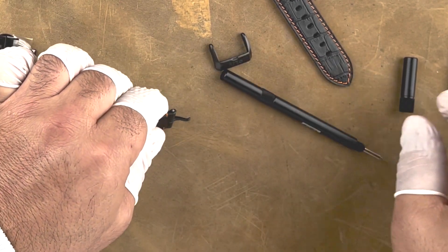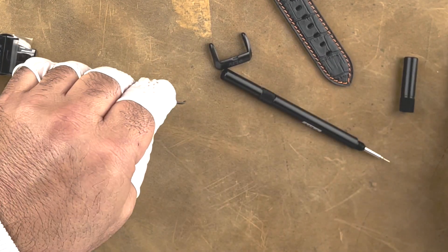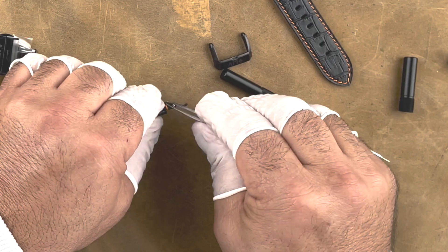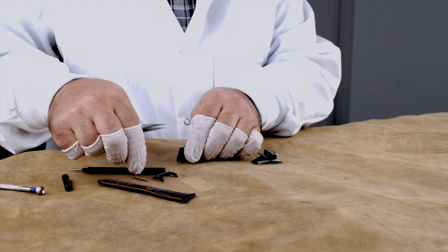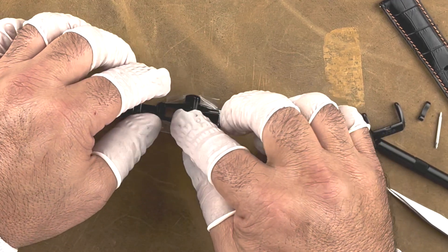Release the buckle off the strap and pull the spring bar out of the strap. Make sure to put the spring bar on the side as we will use it for installation of the deployant clasp.